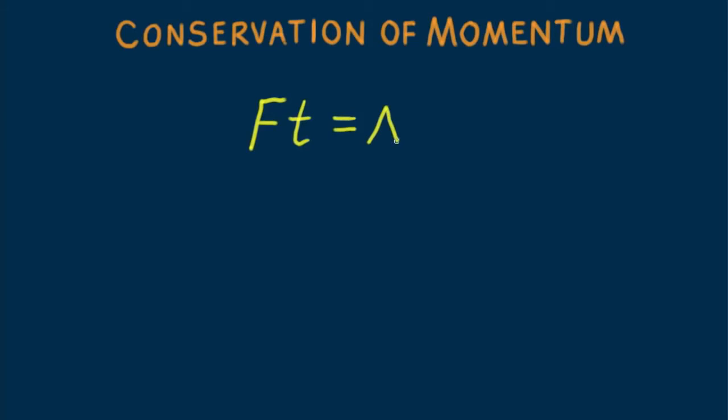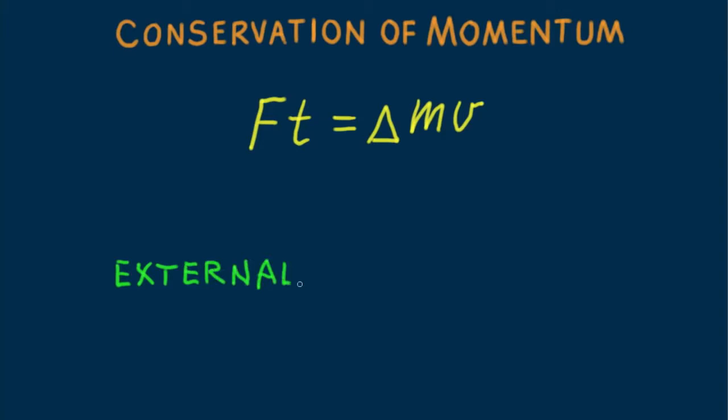The impulse-momentum relationship tells us that when an impulse is exerted on an object, a change in the object's momentum occurs. So if you exert an impulse on a stationary grocery cart, the cart will gain momentum. Or if you exert an impulse on the cart while it's moving, you'll further change its momentum. The impulse that changes the momentum of something has to be an external impulse — only an external impulse changes momentum.